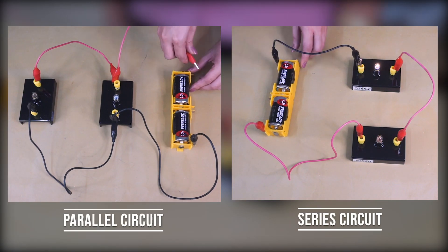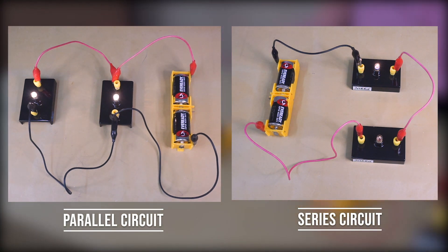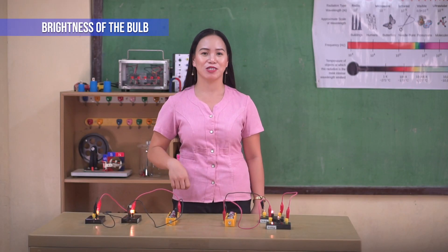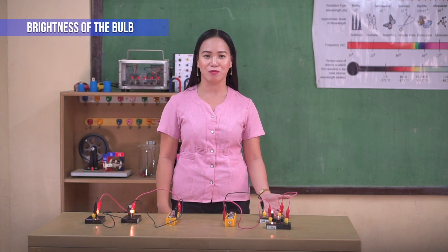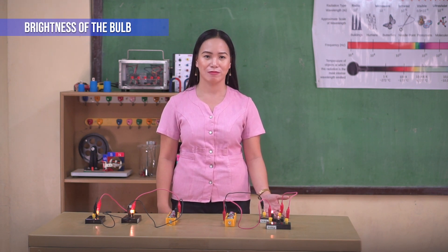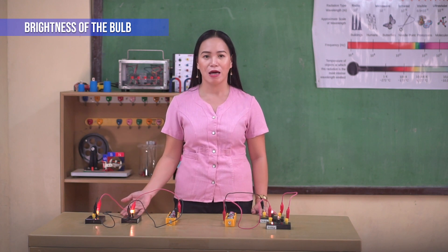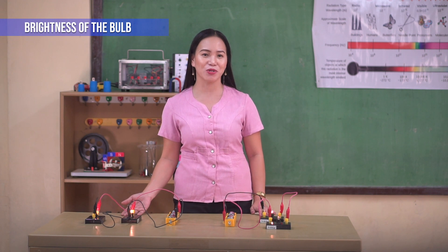Notice that the bulbs in parallel circuits glow brighter than those in the series circuit. In a series circuit, the voltage source is equally distributed among all the bulbs. While in a parallel circuit, the voltage for each bulb is the same as the voltage source in the circuit.